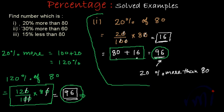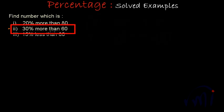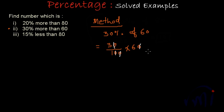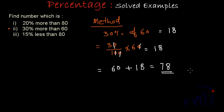The second problem: we have to find 30% more than 60. Using method one, we first find 30% of 60, which is 30/100 multiplied by 60. The zeros cancel and this equals 18. We were supposed to find a number which is 30% more than 60, so that number will be 60 plus 18, which equals 78.